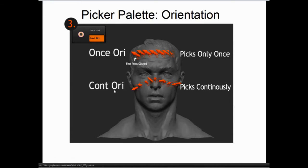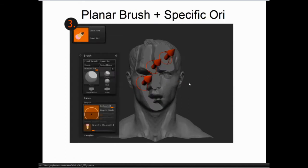Continuous Orientate is different in the sense that it is continuously sampling the surface normal, so this is more useful when we are doing blending, form building, or just refining planes. Choosing a Specific Orientation allows us to define very clear, very controlled planes.